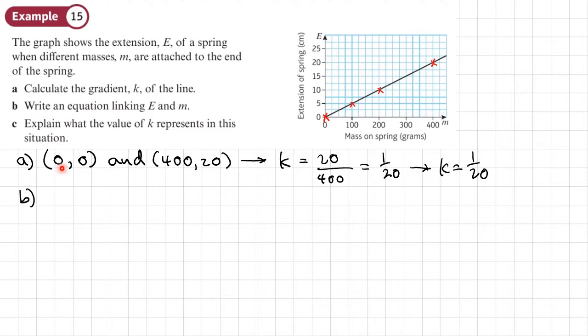Let's go into part b. Write an equation linking e and m. So let's start with y equals mx. Or we could even start with y equals mx plus c. Now, it goes through the origin. So c is going to be 0.